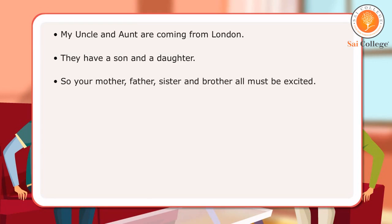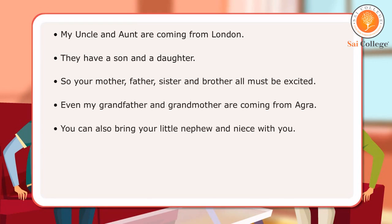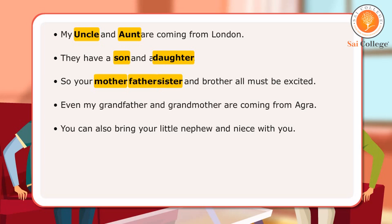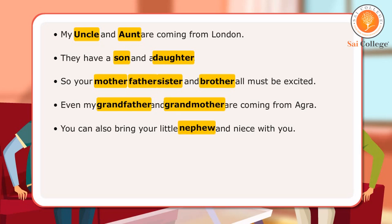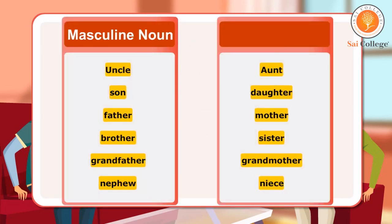In the dialogues, the boys used different words to denote males and females. The words uncle, aunt, son, daughter, mother, father, sister, brother, grandfather, grandmother, nephew and niece are examples of masculine and feminine nouns.